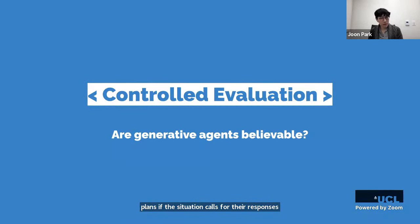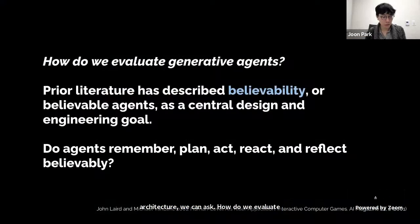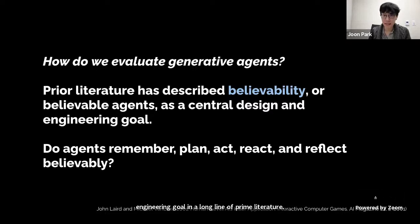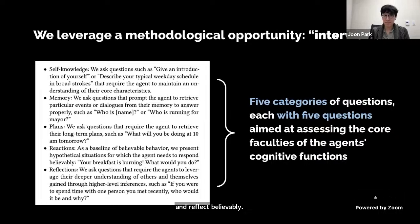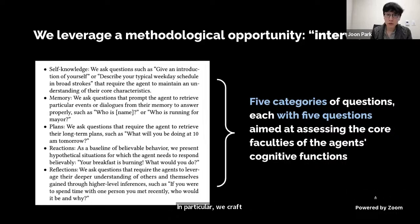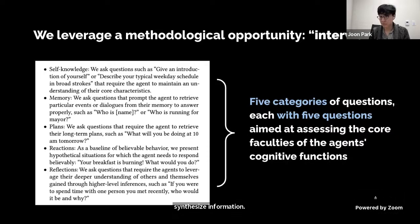Now that I've described agent behavior and architecture, how do we evaluate them? The main dependent variable is believability, which has been a central design and engineering goal in prior literature. Do agents remember, plan, act, react, and reflect believably? To evaluate believability, we leverage a methodological opportunity by interviewing agents in natural language. We craft five categories of questions — five questions each — where to respond properly the agents must successfully retrieve and synthesize information to stay in character, remember, plan, react, and reflect accurately.